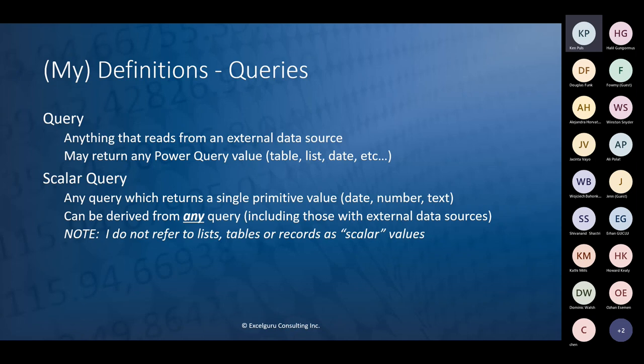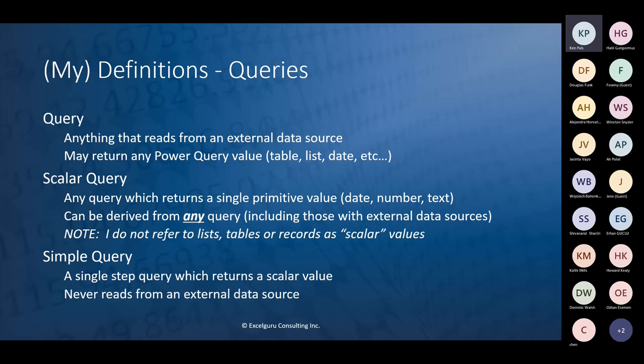A query can connect to an external data source; a scalar query drills down to a single data point. One more term: a 'simple query' is a single-step query that returns a scalar value, never reads from an external data source, and is basically a hard-coded value. This is a very important distinction, because when working with some components you need to know whether you can use a scalar query or a simple query in place of certain things.